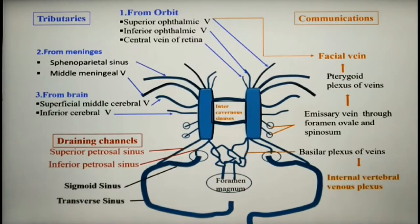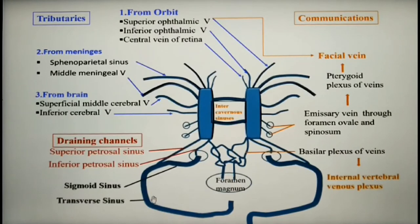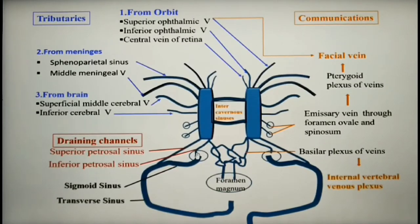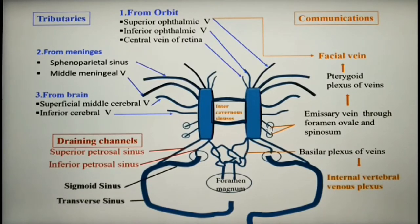There are communications between the cavernous sinus and other distant veins through which their contents get exchanged. For example, the cavernous sinus drains into the transverse sinus through the superior petrosal sinus. It also drains into the internal jugular vein through the inferior petrosal sinus. Additionally, the cavernous sinus drains into the pterygoid plexus of veins through an emissary vein that passes through the foramen ovale and spinosum.